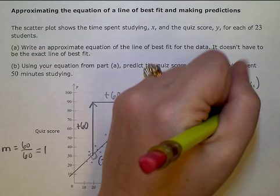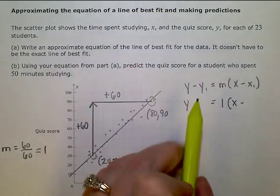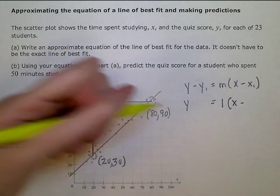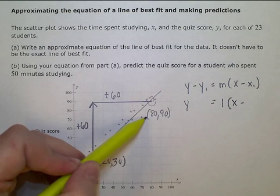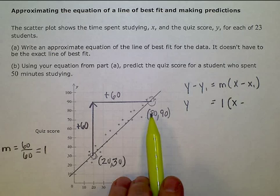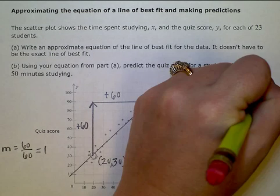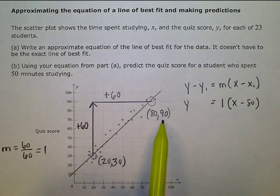Now for my x₁ and y₁, I just need one of these two points. It doesn't really matter which one. I'm going to choose this one. For my x value, I'm using 80, so I have x minus 80. And over here, I have y minus 90 as my y value.